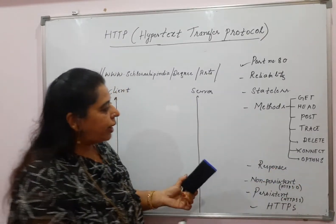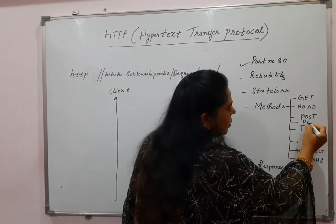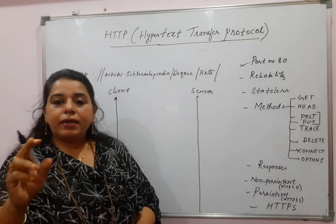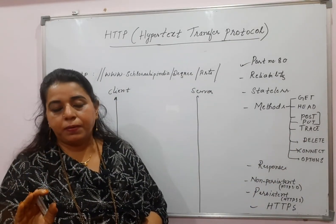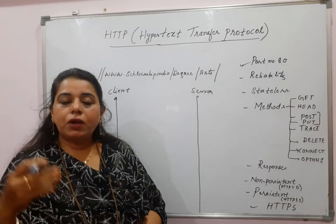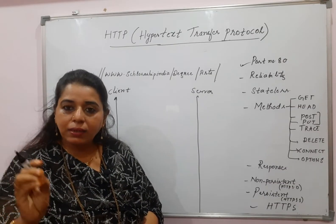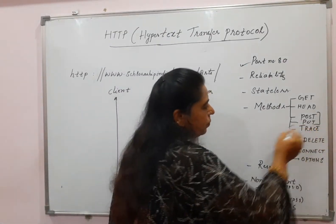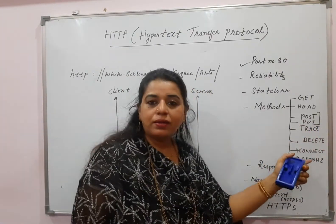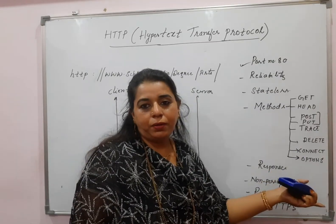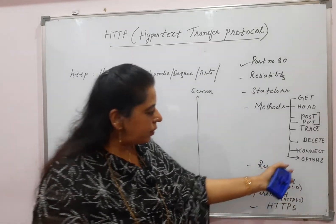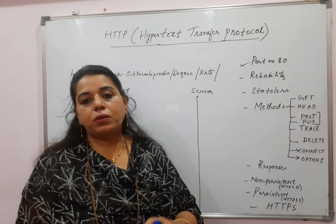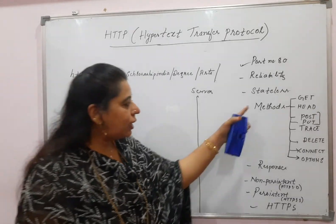CONNECT is a reserved method which can be used by proxy servers. The PUT method allows the client to send a document to the server. The difference between POST and PUT is: PUT sends a new document to the server, while POST is used when the document already exists and you are adding extra information to it. OPTIONS is a method wherein the client wants to know the properties of a web page. These are the different methods available.